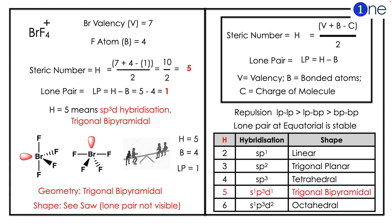So if you substitute in the formula you have five. The lone pair will be H minus B, which is five minus four equals one. So H equals five means sp3d hybridization, so trigonal bipyramidal geometry.